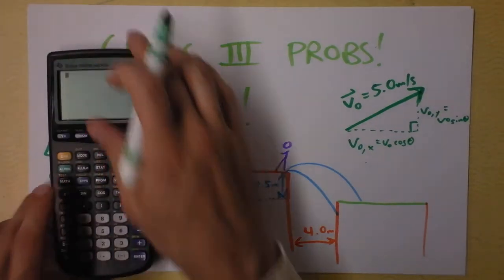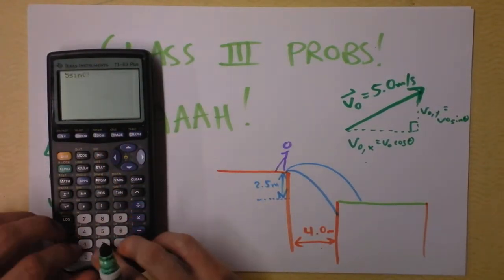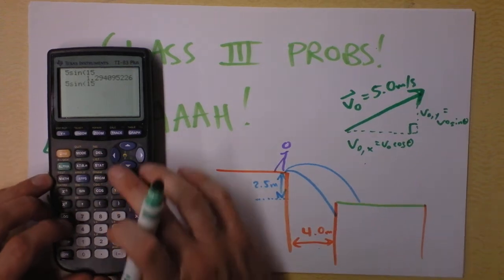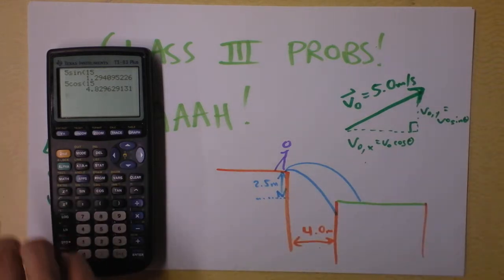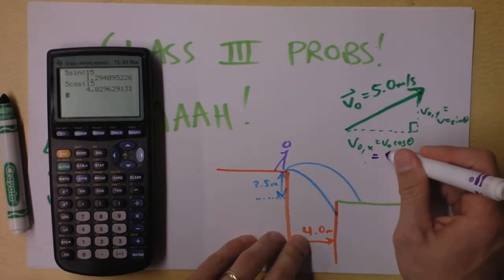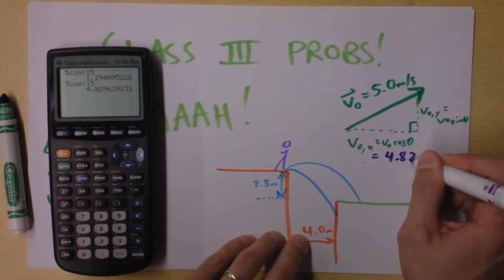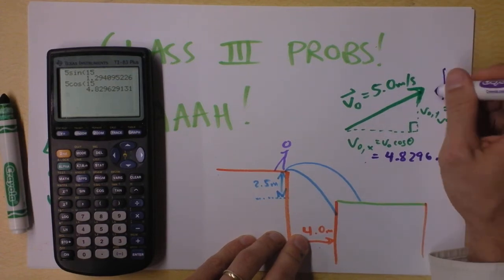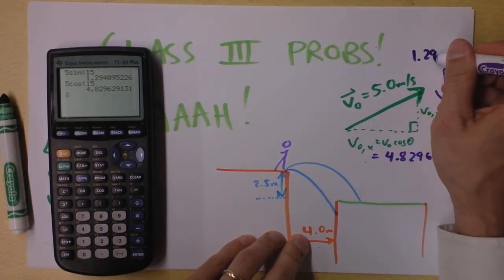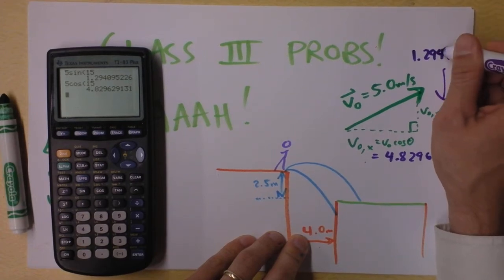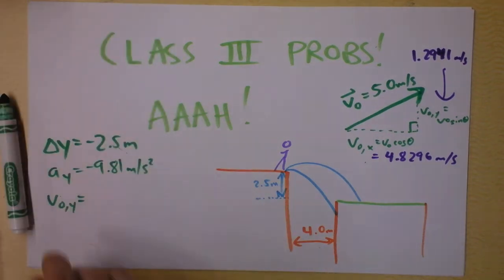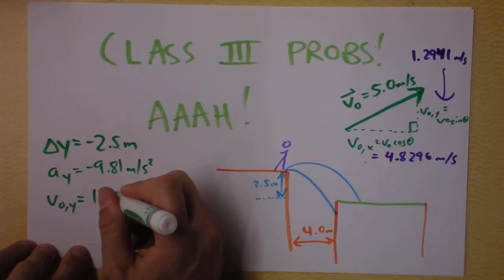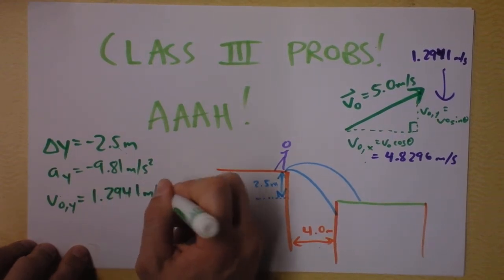Let's get some numbers on those suckers. I'm talking about 5 times the sine of 15 degrees and 5 times the cosine of 15 degrees. I enter those two numbers in my calculator, and I find these two numbers. Velocity in the x direction, 4.8296 meters per second. And the velocity in the y direction, check that out, that is 1.2941 meters per second. So the initial velocity in the y direction is given over here as 1.2941 meters per second.